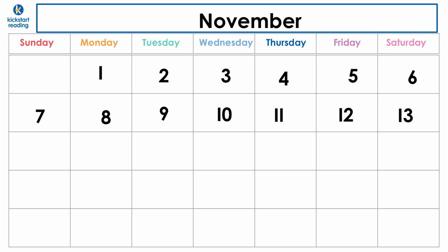We're going to go down to the next row and we're going to write the number 14. 15. 16. 17. 18. 19. 20. You're doing great. Remember, if I'm going too fast, just pause the video.